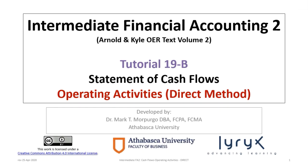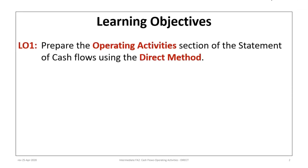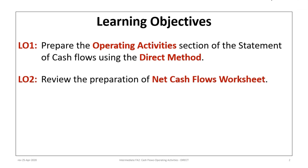Welcome to Intermediate Financial Accounting 2, Tutorial 19b. This is the second in a series of tutorials related to preparation of the statement of cash flows. This tutorial will focus on preparing the operating activity section using the direct method. There are two learning objectives: first, to prepare the operating section using the direct method, and second, to review the preparation of an optional net cash flows worksheet, which some students find helpful.